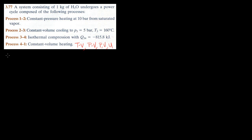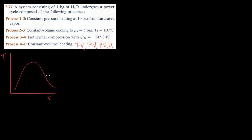Let's start with the TV diagram. The TV diagram has T on the vertical axis and V on the horizontal axis, with a dome shape separating the two-phase region from the single-phase region — specifically the superheated vapor region and the subcooled liquid region. Process one to two is a constant pressure heating at 10 bar from a saturated vapor, so state one is on the vapor side of the curve.